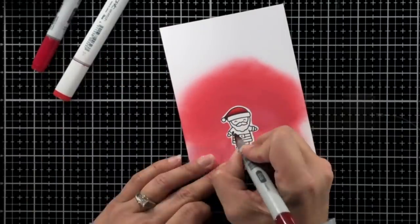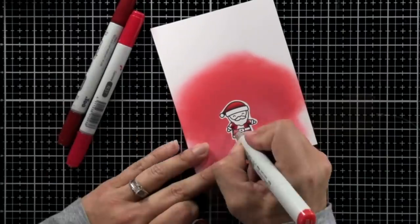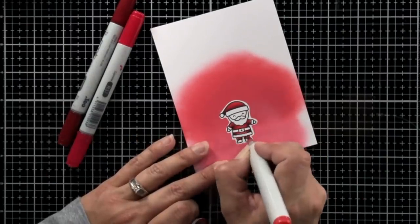So I'm starting off with my darkest color, which is the R59, blend out with the R37, and then a little highlight area, the R24.